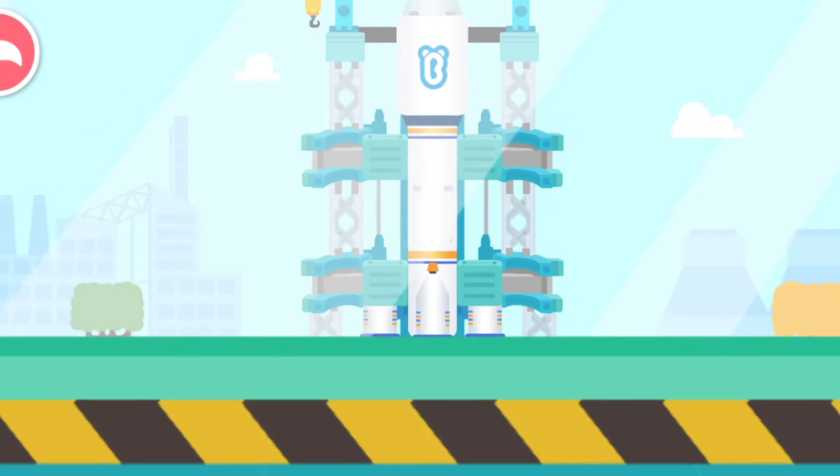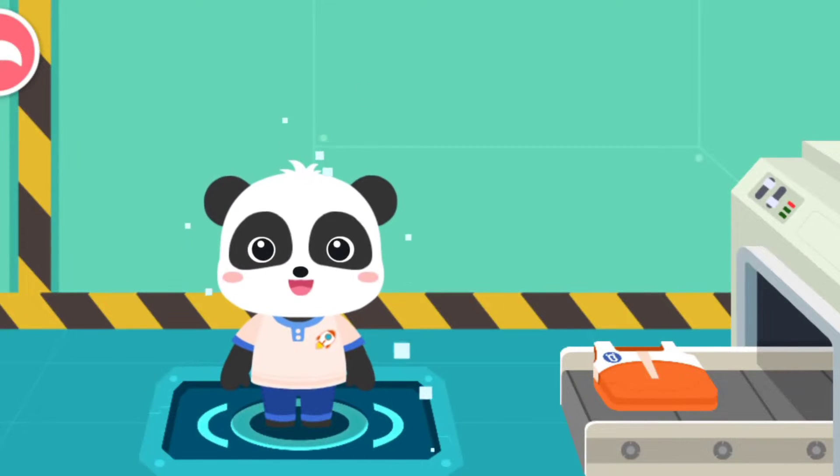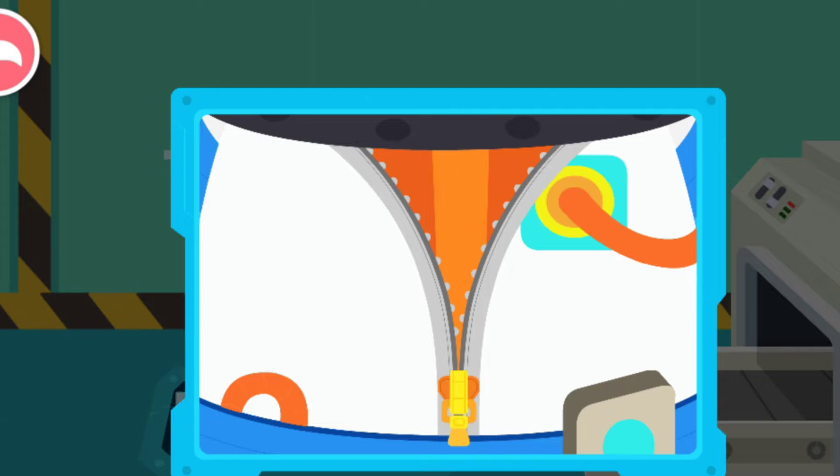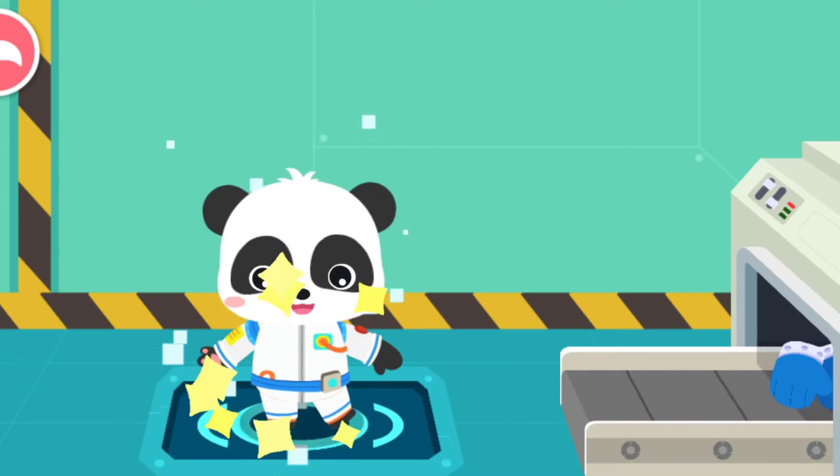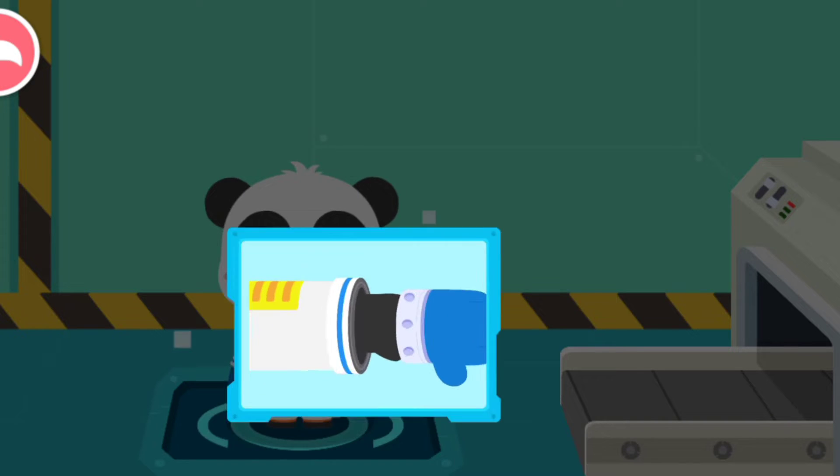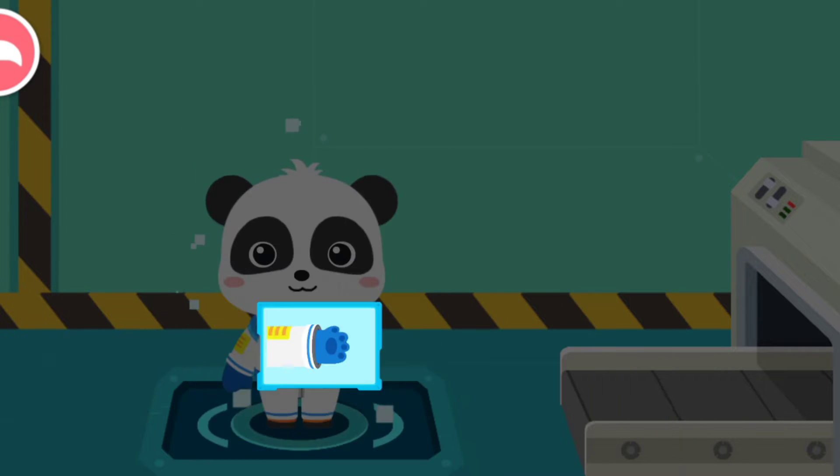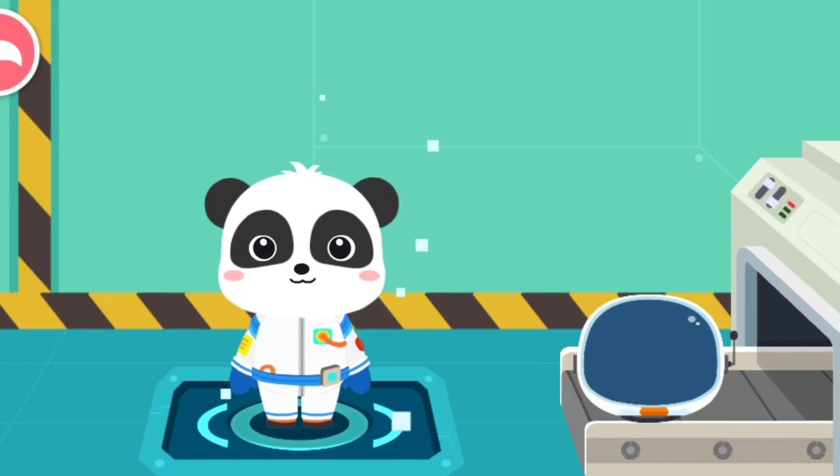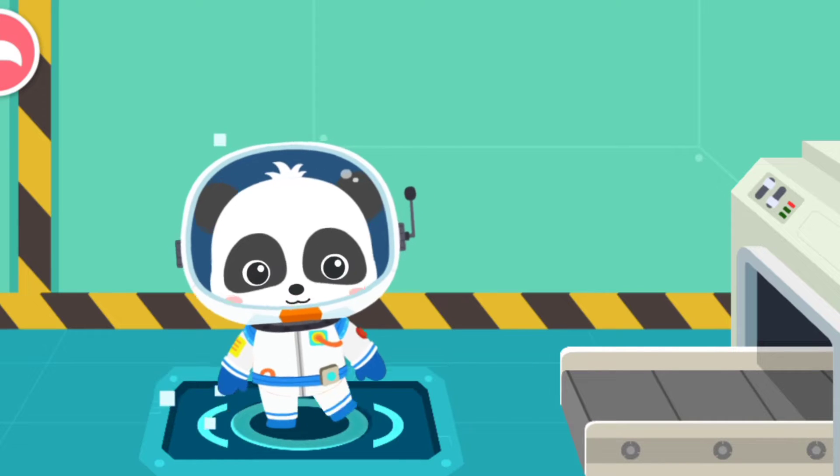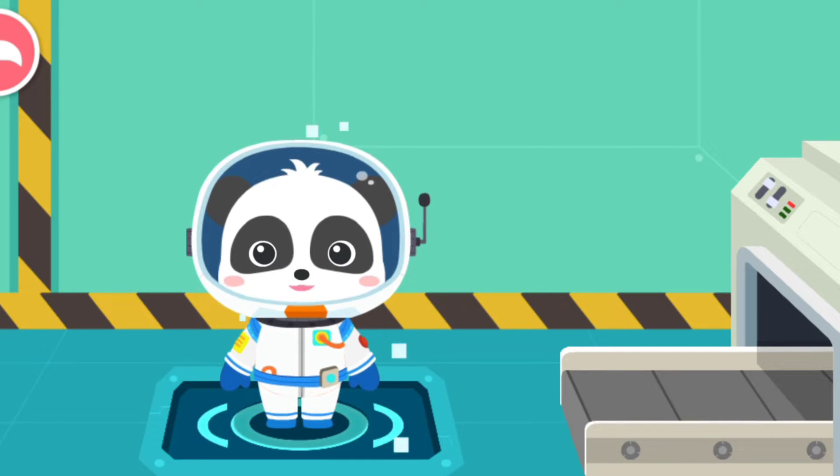Hi, I am astronaut. Change into the outfit of the astronaut first. Tight, close, it can protect the space suit. Fasten the buckles. Helmet. Shoes. Outfit change is complete. Let's go to the launching pad and head for the universe.